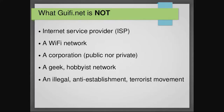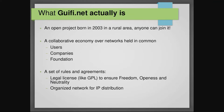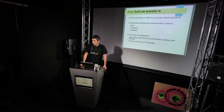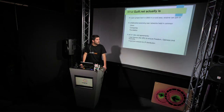So what is GIFINET? I like this definition: GIFINET is a collaborative economy over networks held in common, where there are mainly three different kinds of actors — users, companies, and a foundation. The project was actually started in 2003 in a rural area where there were many farms without internet access, and companies were not bringing the internet there because the business model was not suited for that rural area.